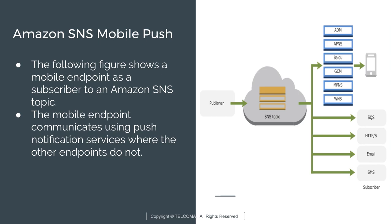This figure shows a mobile endpoint as a subscriber to an Amazon SNS topic. The mobile endpoint communicates using push notification services, whereas other endpoints do not. The other endpoints — SQS (Simple Queue Service), HTTP or HTTPS, email, and SMS — are subscribers that do not communicate via push notification services.